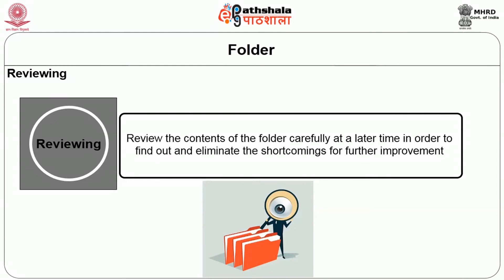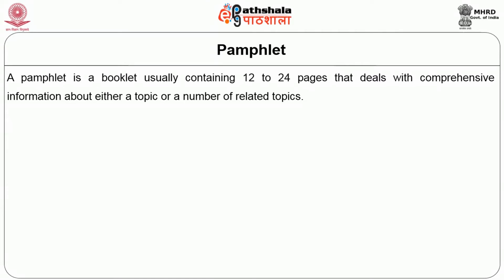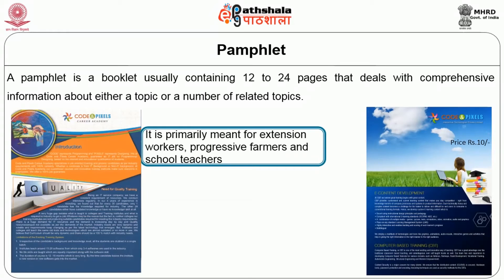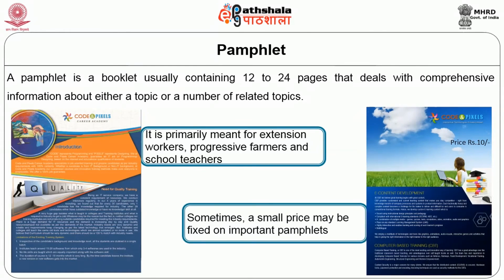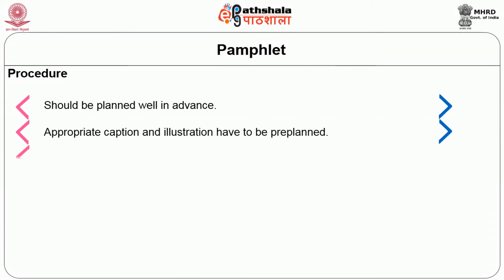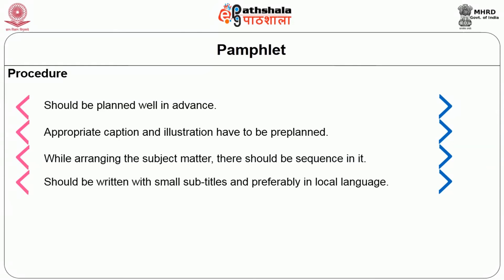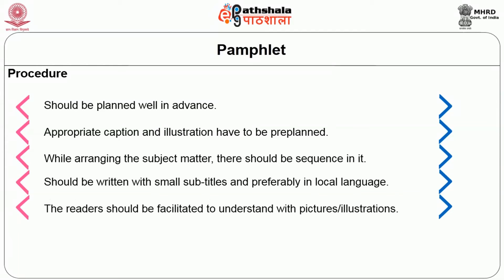A pamphlet is a booklet usually containing 12 to 24 pages that deals with comprehensive information about either a topic or a number of related topics. It is primarily meant for extension workers, progressive farmers, school teachers, or homemakers, and sometimes a small price may be fixed for important pamphlets. In preparing a pamphlet: plan well in advance; pre-plan appropriate captions and illustrations; arrange subject matter in sequence; write with small subtitles and preferably in local language; facilitate reader understanding with pictures and illustrations; always carry a serial number, catchy title, and the organization's name; and review for corrections.